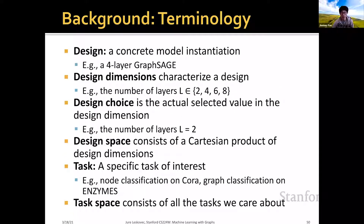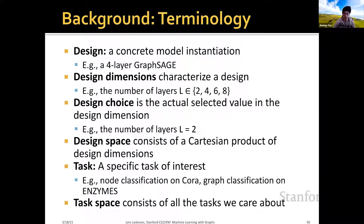To begin, we first introduce the terminology we'll use in this lecture. A design means a concrete model instantiation — for example, a four-layer GraphSage is a specific design. Design dimensions characterize a design; for example, a design dimension could be the number of layers L, which could take values among two, four, six, eight. A design choice is the actual selected value in the design dimension — for example, L equals two.